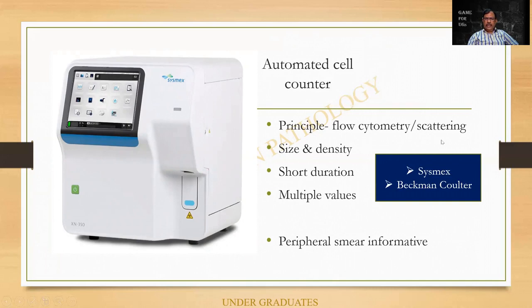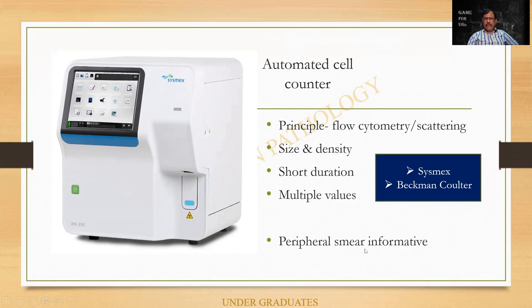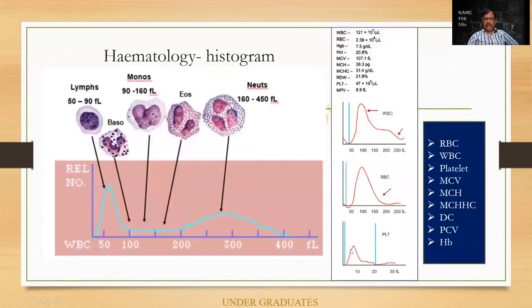This is an automatic counter called Sysmex. There are two companies — Sysmex and Beckman Coulter. When you keep a drop of blood, it is sucked in and the machine does the counting. The principle is flow cytometry — different light is scattered and, because of the density and size of the cell, you are able to identify it. It is of short duration, multiple values can be obtained, and many samples can be run in a short time. And yet, in spite of all this, the peripheral smear is the most important part of a hematology exercise. This is the hematology histogram seen in a Sysmex or Coulter counter — from the graph you can make out whether it is a neutrophil, eosinophil, lymphocyte, etc.